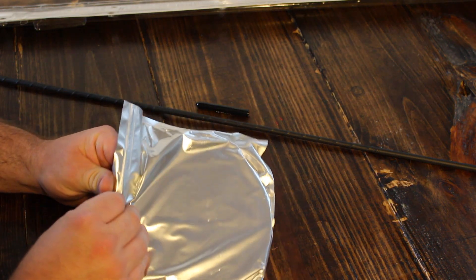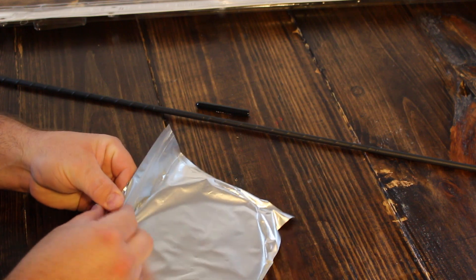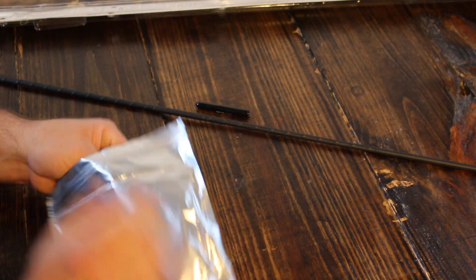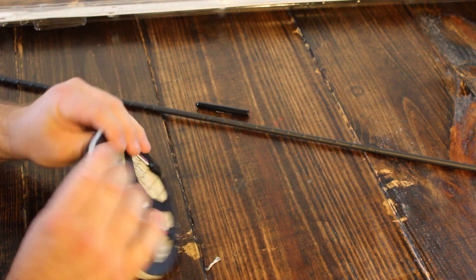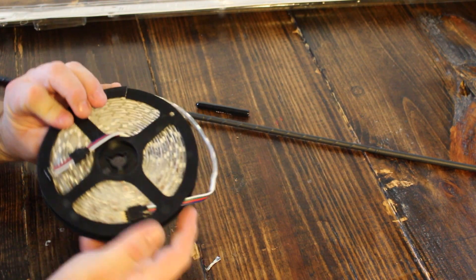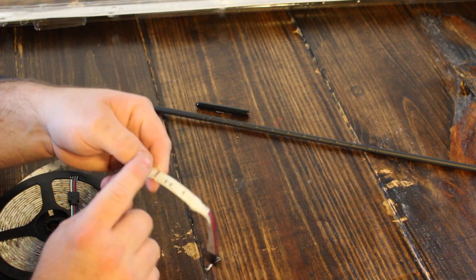This is your LED kit. This is 5 meters of weatherproof RGB. Weatherproof means, if you've never opened one of these before, it has like a clear coating across the top right here.